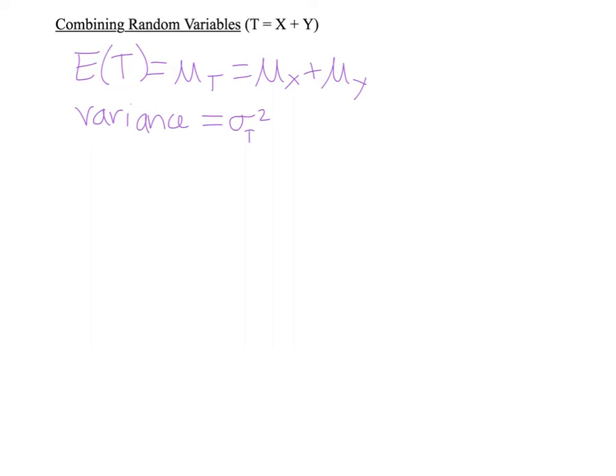The second part of this section has to do with combining random variables. If you have a variable T defined as X plus Y, your expected value — which is the same as your mean — will just add your means together. The tricky thing is finding the standard deviation. Standard deviations are not going to add together; you are not allowed to add them. What you are allowed to do is add the variances.